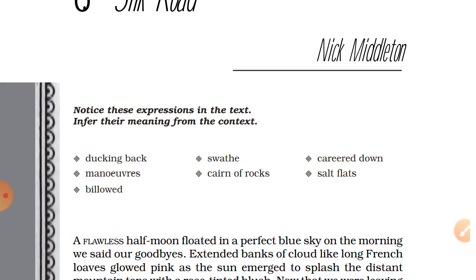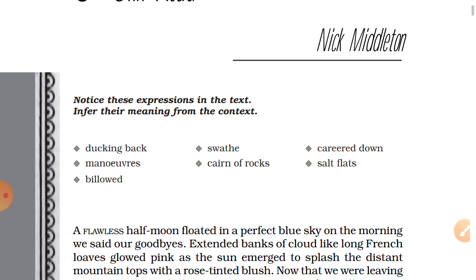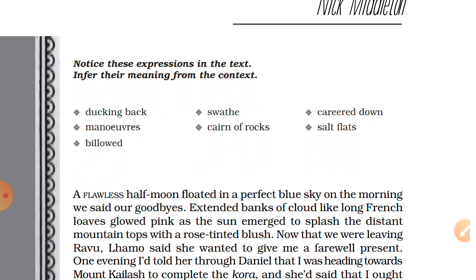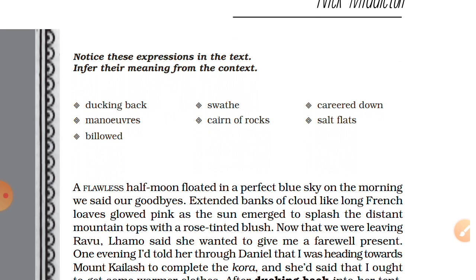It's all about the author's visit to Mount Kailash. Before we go through the text, here are some expressions: ducking back, man hours, bellowed, sweat, carrying of rocks, career down, salt flats — these are some expressions used in the text and we will discuss them.